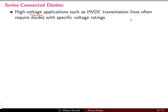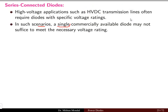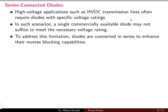Generally in high voltage applications, such as high voltage DC transmission lines, diodes with specific voltage ratings are required. In such scenarios, a single commercially available diode may not be sufficient to meet the necessary voltage rating. To address this limitation, diodes are connected in series to increase the voltage rating and enhance their reverse blocking capabilities.